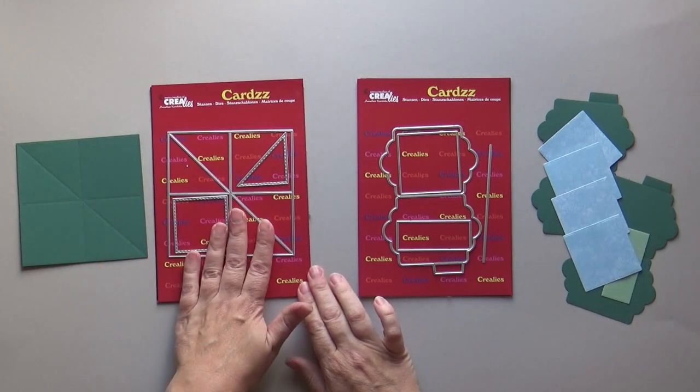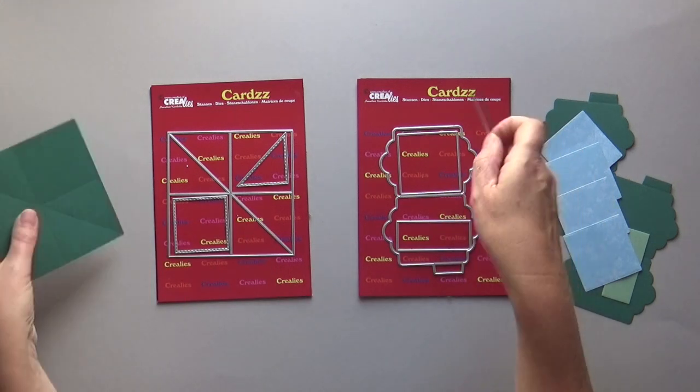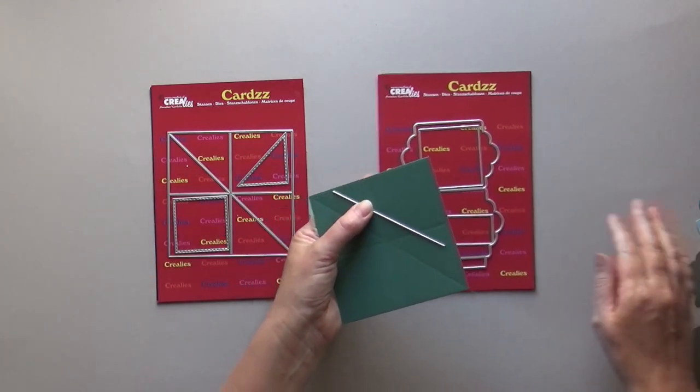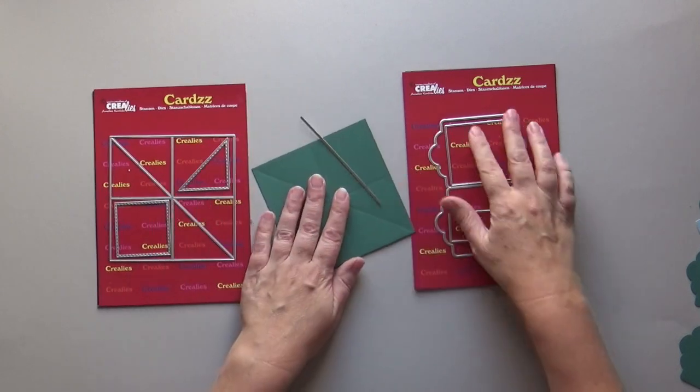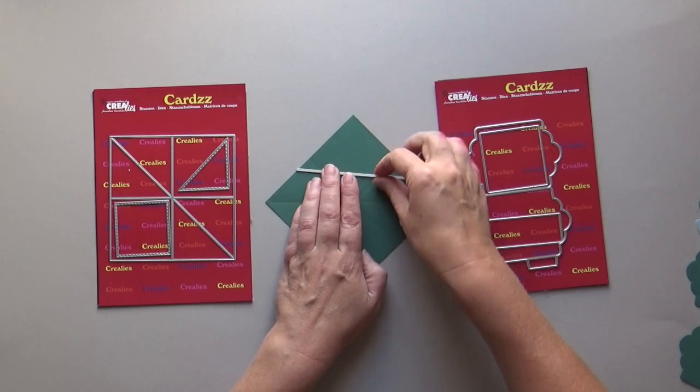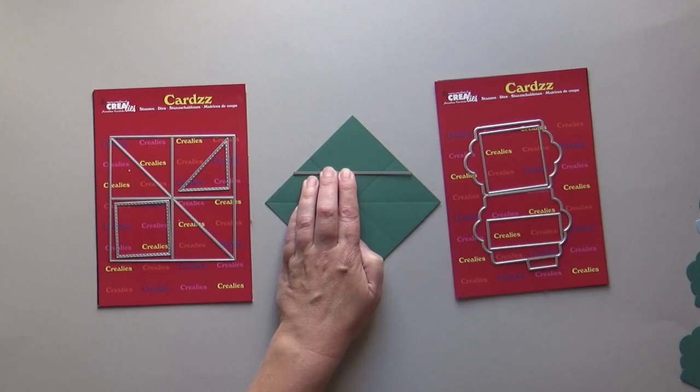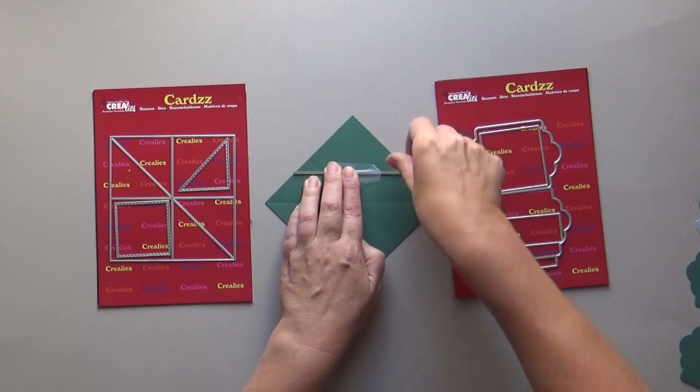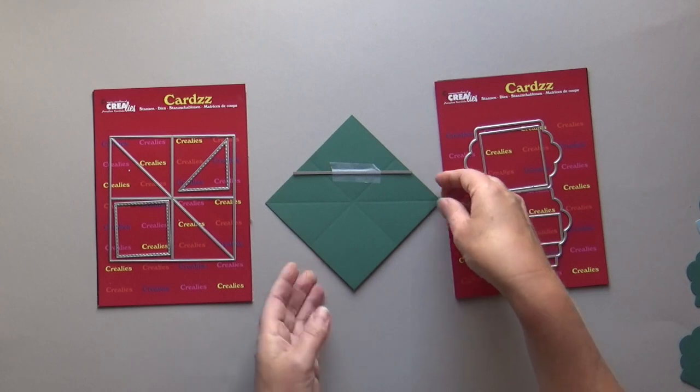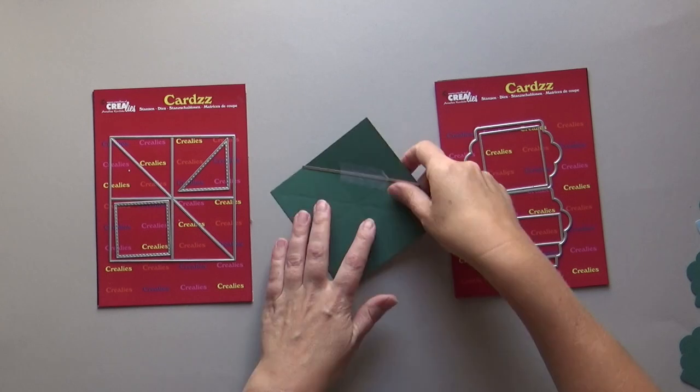Two corners of the die cut square of cards number 13 must be cut off. You can use the long straight die of cards number 13a. Make sure that the diagonal score line lies horizontal. Place the straight die parallel with the scoring line in the middle so that the die still touches the outer edges of the square. Die cut and repeat on the other side.